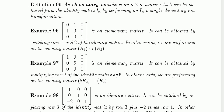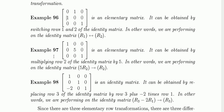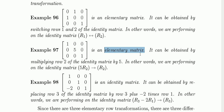Example 97 is simple too. The matrix 1 0 0 / 0 5 0 / 0 0 1 is also an elementary matrix. Why? Because it can be obtained by multiplying row 2 of the identity by 5 — that is, performing the transformation 5 × row 2. So this one is also an elementary matrix.